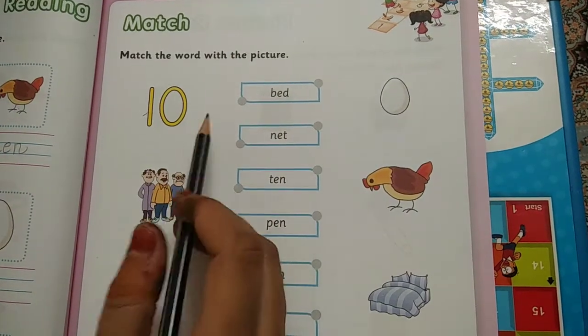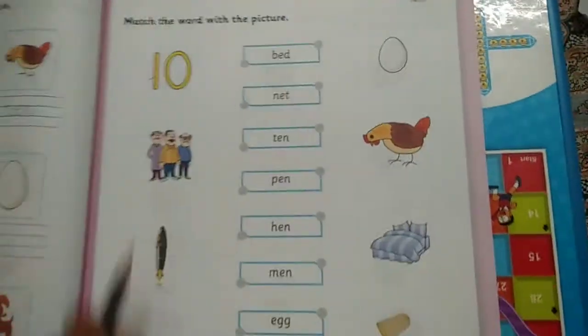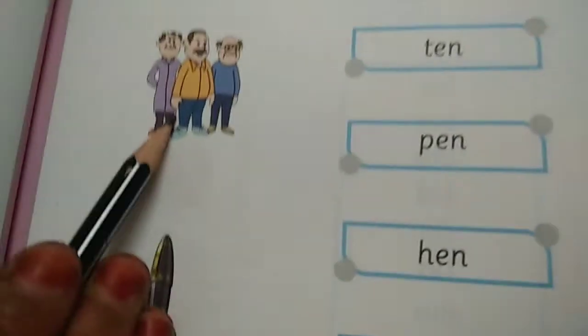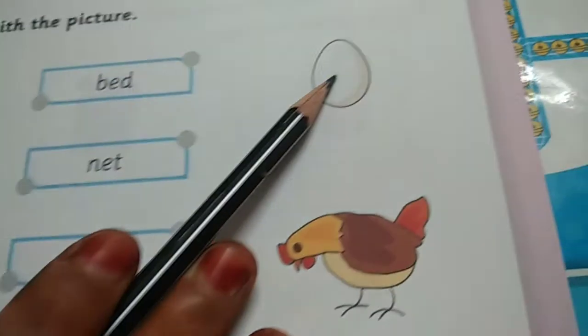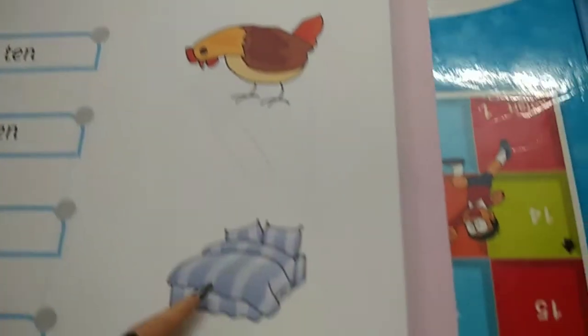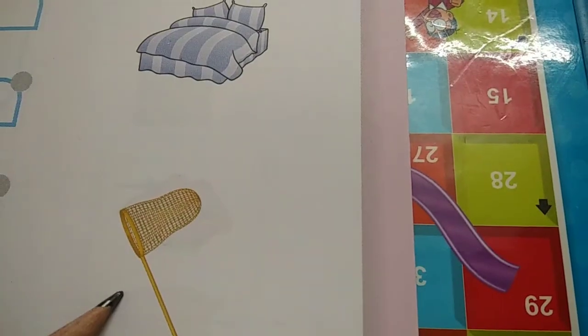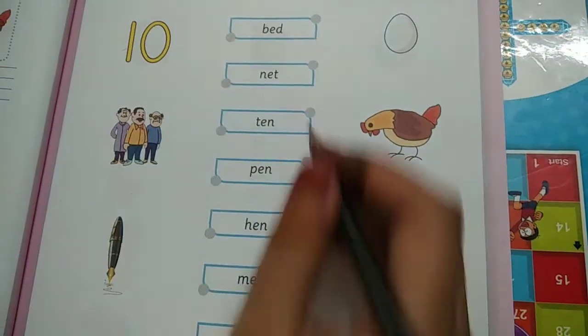You can see the objects over here. That is pen. This is men. Pen. Den. Egg. Hen. Bed. And net. So you have to take your mama's help.